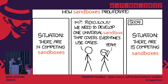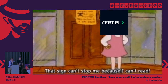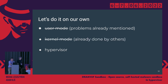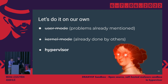Obviously if you want to do something on your own you need to bring up the 'why would you do that yourself' meme — but I bring a counter-meme: that sign can't stop me because I can't read, so we'll do it on our own anyway. We have three options: user mode, which we've shown has problems; kernel mode, which has already been done by others and is boring; so let's do it in hypervisor mode — the hard way.